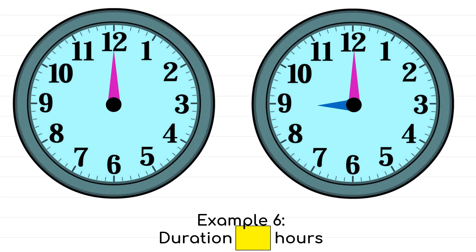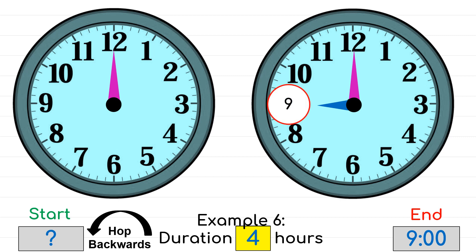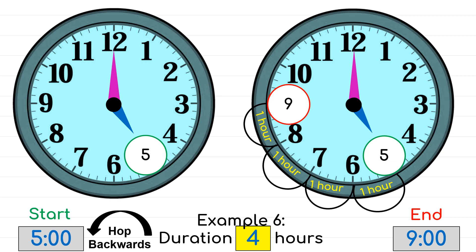Let's find the starting time for this next example. We're given the duration as 4 hours and the ending time pointing at 9 o'clock. We hop backwards because we're trying to find the starting time — start from 9 and hop backwards 4 times. We reach 5 o'clock, and that is our starting time. We can verify: starting at 5 o'clock, 4 hours later it will be 9 o'clock. Our answer is correct.